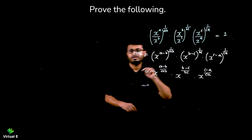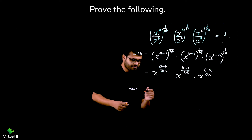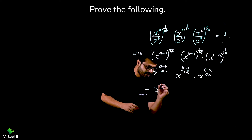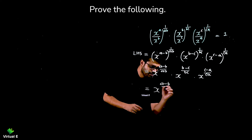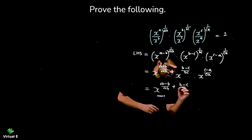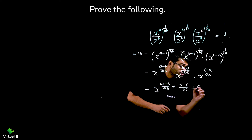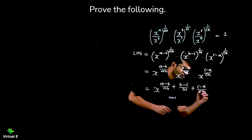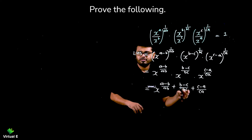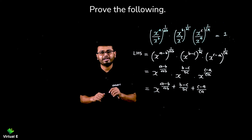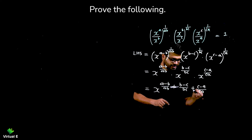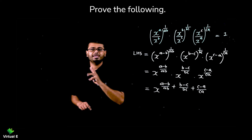Now we are going to multiply these powers because we have the case of multiple powers. So: X raise to a minus b over ab, into X raise to b minus c over bc, into X raise to c minus a over ca. Now we have the same base, so we are going to add the powers: X raise to a minus b over ab, plus b minus c over bc, plus c minus a over ca. We have a fraction form, so we take the LCM of ab, bc, and ca, which is abc.